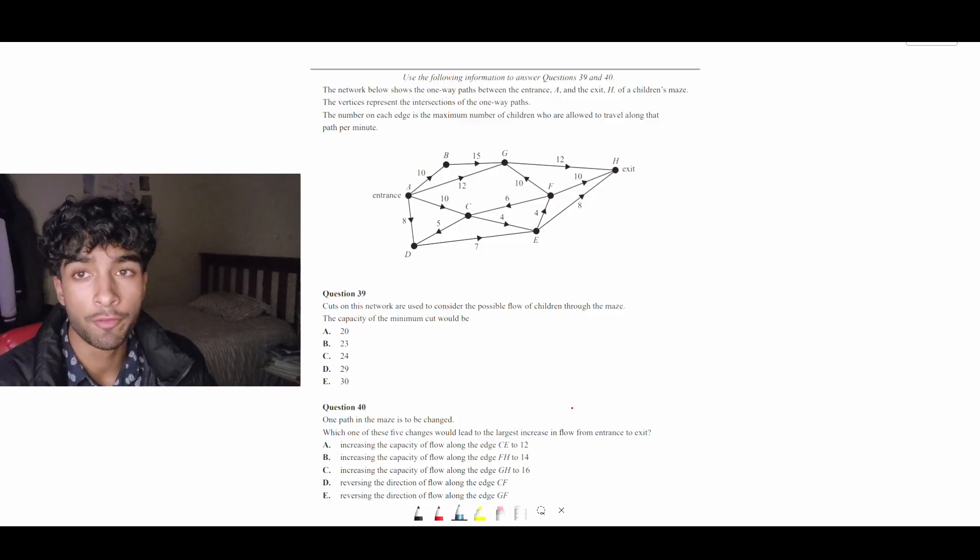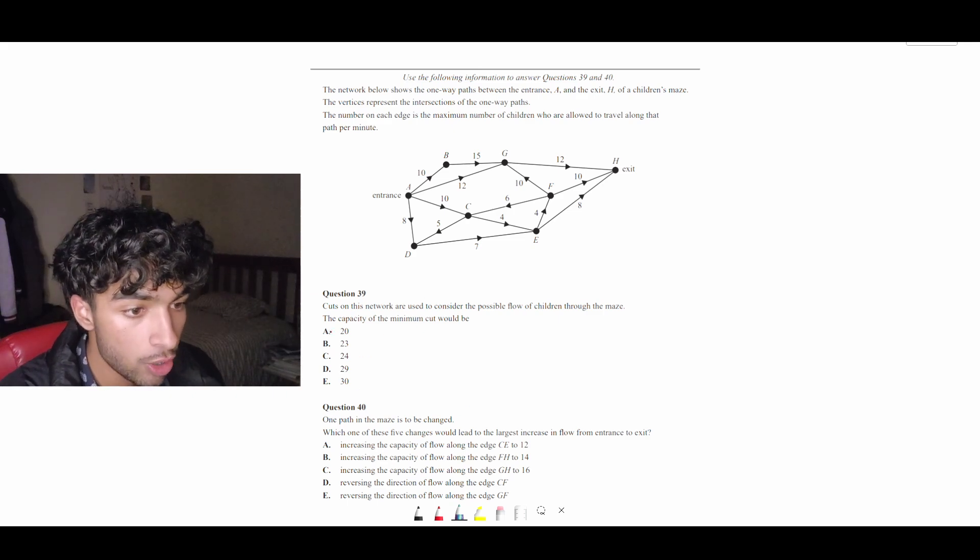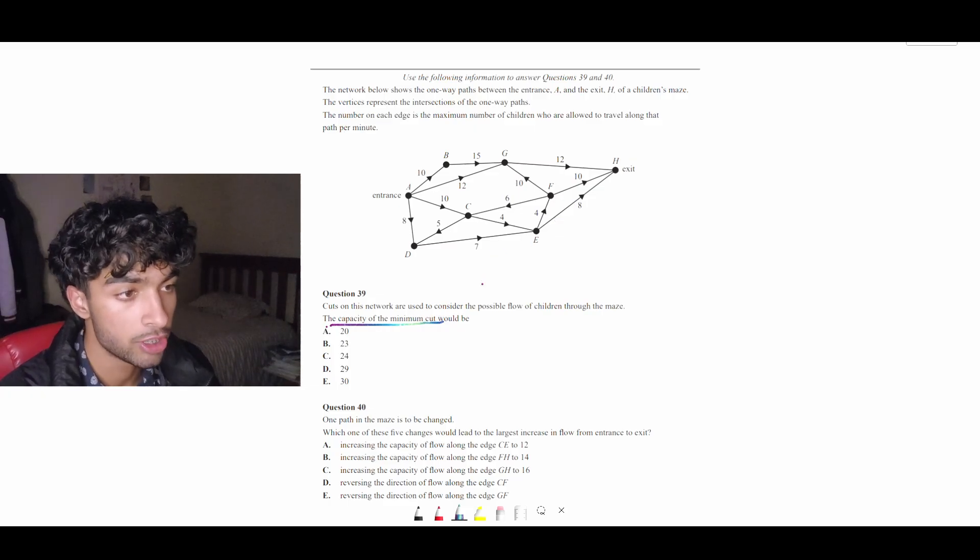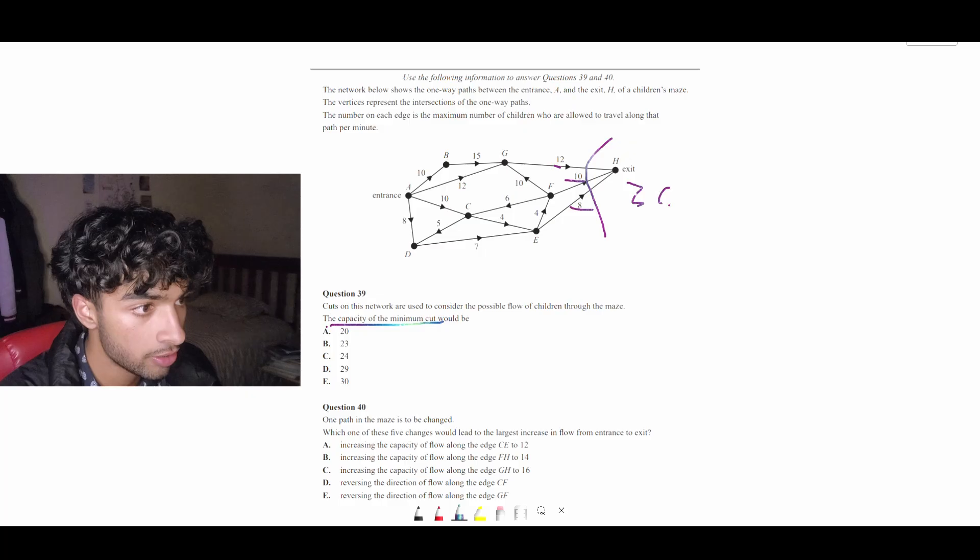So this question is a flow question which was actually on my exam last year and I actually ended up taking a long time to do it. But there's actually a much faster way to do this type of question. So we're wondering what the capacity of the minimum cut would be. So you're probably familiar with this but using the minimum cut strategy where you cut across the thing and you look for the minimum. So we can go down here. 12 plus 10 plus 8 is 30. This may or may not be the minimum cut.